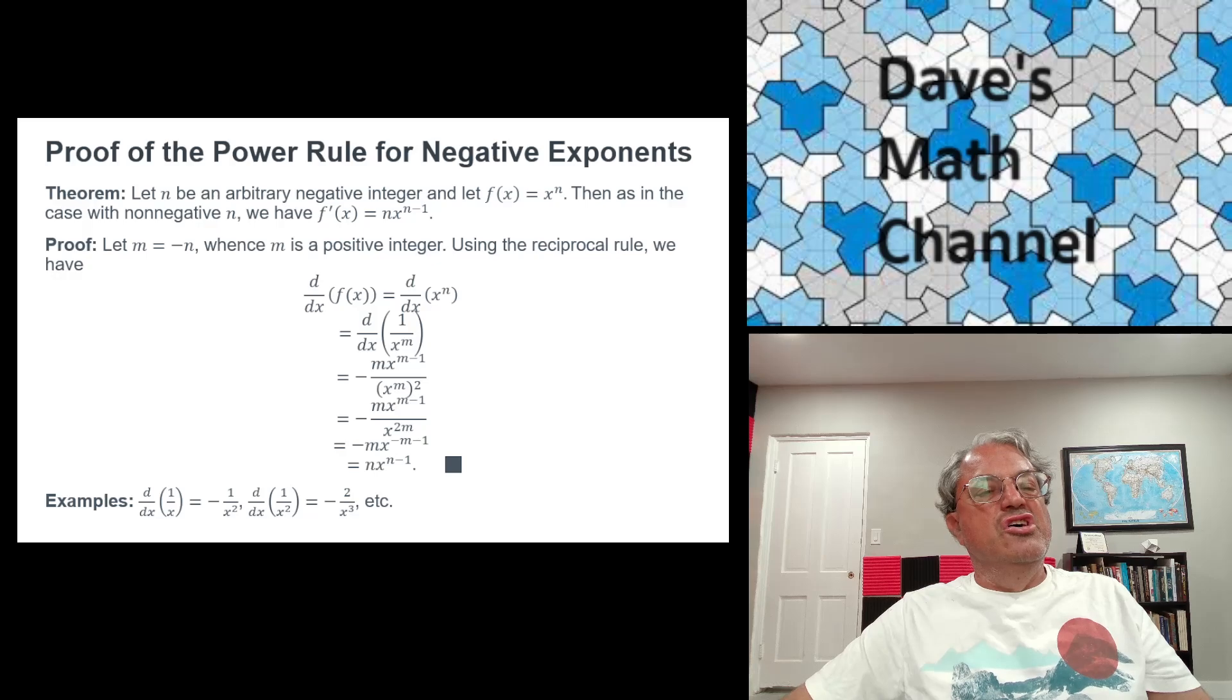So let's do it. The derivative of f(x)—I'm using Leibniz's notation here—is equal to the derivative of x^n, which is the same as the derivative of 1/x^m. Remember, x^n is x^(-m), which is the same as 1/x^m.